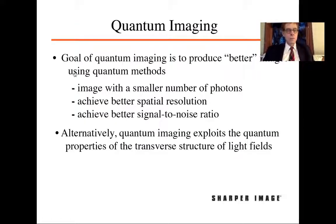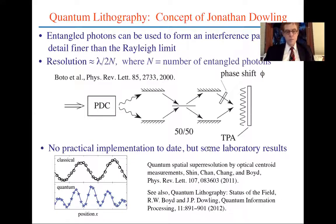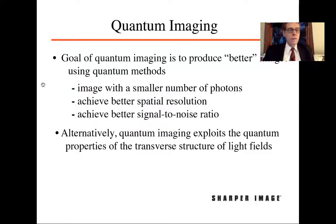So quantum imaging. What is quantum imaging? The goal of quantum imaging is to produce better images using quantum methods. What do we mean by better? Perhaps we can form an image with a smaller number of photons, perhaps we can achieve better spatial resolution, or perhaps we can achieve better signal-to-noise ratio.